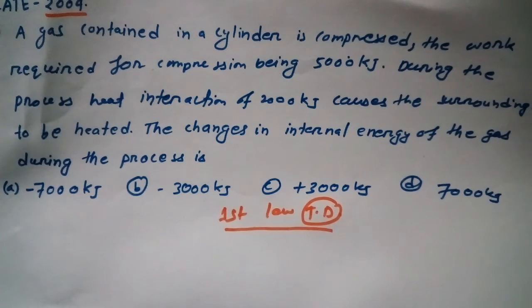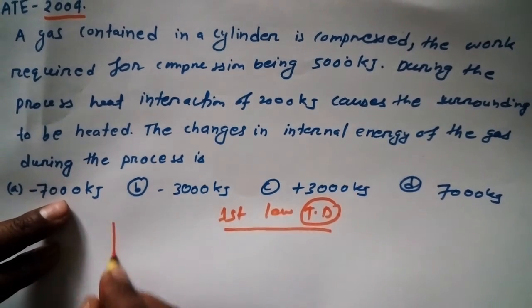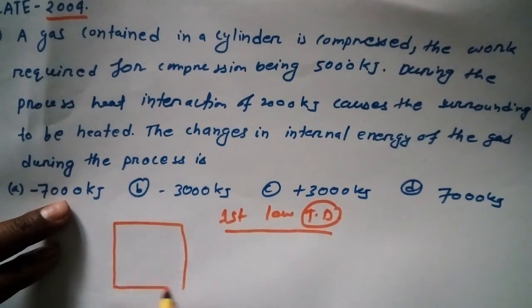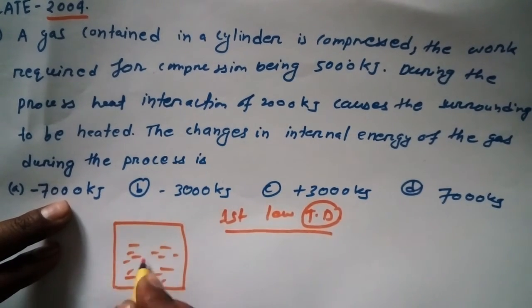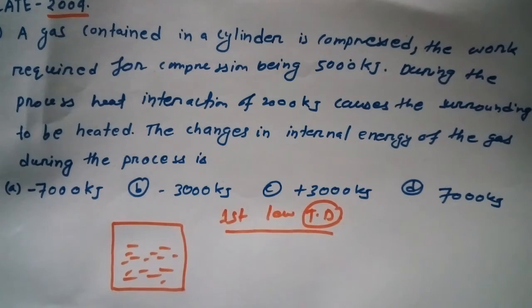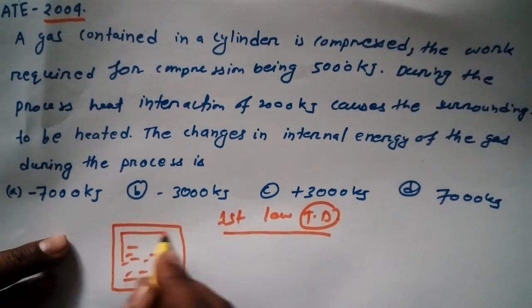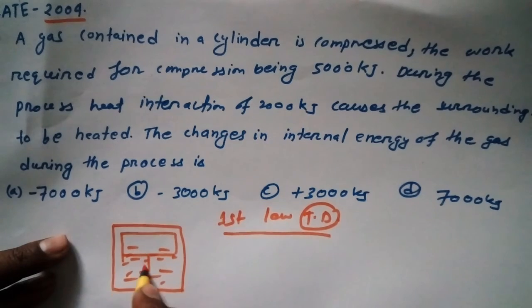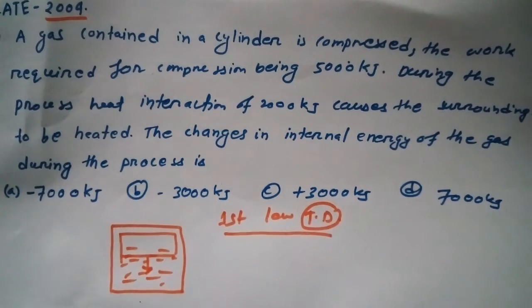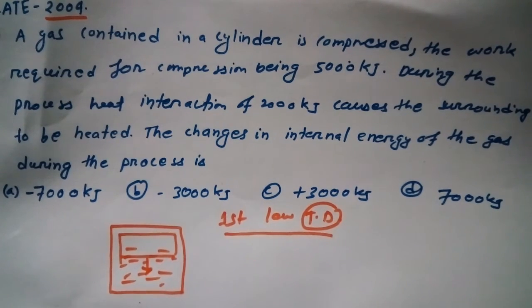So in the question, we have been given a gas contained in a cylinder. Suppose this is the cylinder, and inside this cylinder there is a gas. Now the cylinder is compressed — suppose this is the container and the cylinder is being compressed. The work required for the compression is five thousand kilojoules.